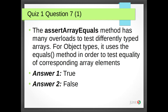Quiz 1 Question 7: The assertArrayEquals method has many overloads to test differently typed arrays. For object types, it uses the equals method in order to test the equality of corresponding array elements. Answer 1: True. Answer 2: False. The correct answer is Answer 1, True.